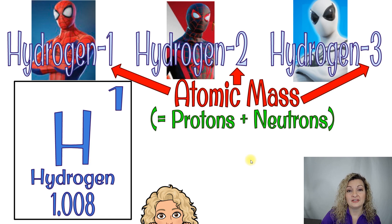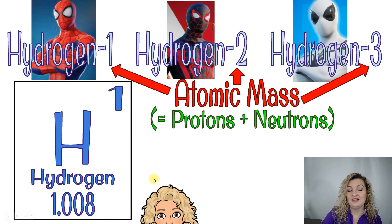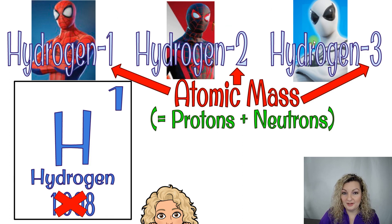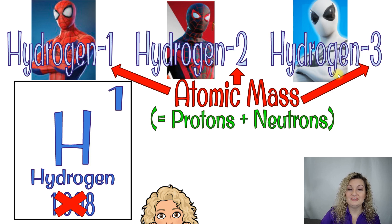We can look at the periodic table to find this information. Here's a periodic table square for Hydrogen — in the upper right-hand corner, or sometimes right above the H, you're going to see the protons. The number of protons is one for Hydrogen. So no matter which Spider-Man we're looking at, it's still Spider-Man. No matter which Hydrogen we're looking at, it's still Hydrogen because it has one proton, and that's what identifies the element.